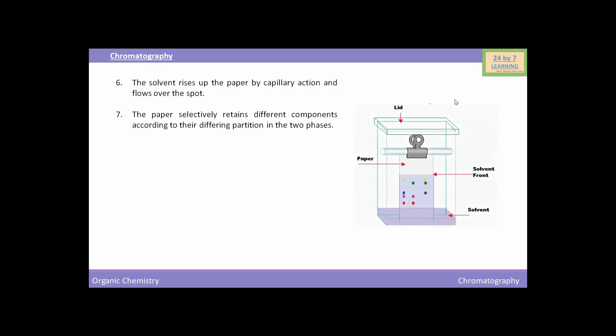You can see here in this picture of paper chromatography, this is the solvent containing jar and here you can see this is the solvent which is rising up the paper by capillary action and flows over the spot. You can see this is the solvent front. The paper strip so developed is known as the chromatogram.